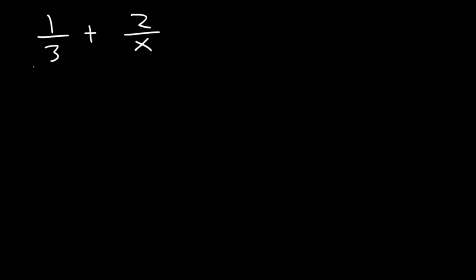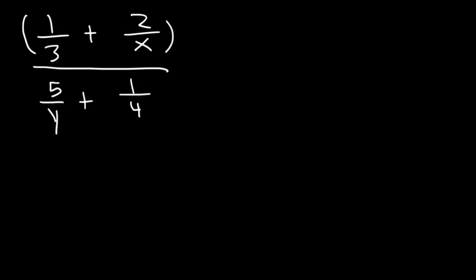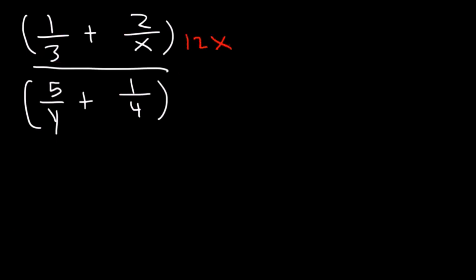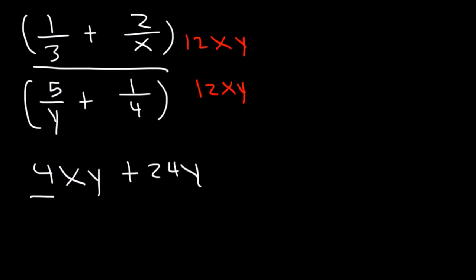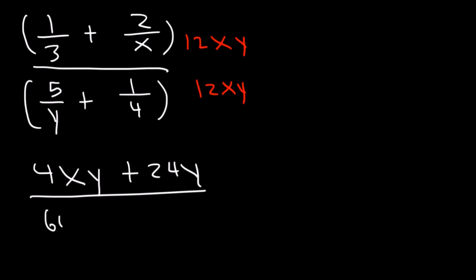Now let's move on to our next example: 1 over 3 plus 2 over x divided by 5 over y plus 1 over 4. We need to identify the common denominator. The common denominator has to contain a 3, an x, a y, and a 4. 3 times 4 is 12, so the common denominator is going to be 12xy. 1/3 of 12xy is 4xy. 2 over x times 12xy — the x variables will cancel — so it's 2 times 12y, which is 24y. 5 over y times 12xy — the y variables will cancel — so it's 5 times 12x, which is 60x. And then 1/4 of 12xy is 3xy.